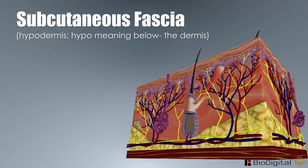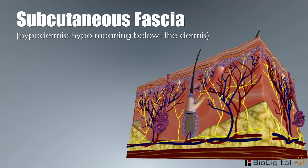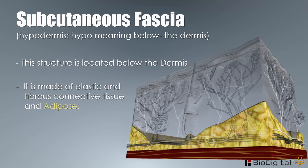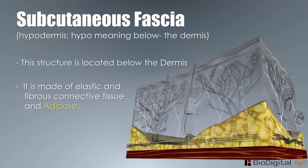Subcutaneous fascia, or hypodermis. This structure is located below the dermis, at the bottom of the innermost layer of the skin. It is made of elastic and fibrous connective tissue and adipose, which is fatty tissue. The purpose of this layer is to connect the skin to the underlying muscles. Adipose, or fat, is the yellowish section found in this layer.